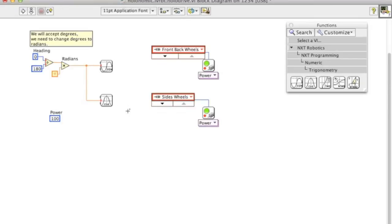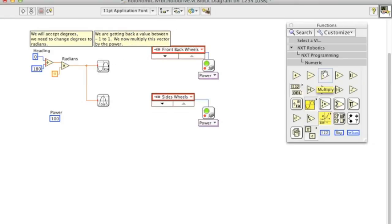Now the sine and cosine values we get back are between negative 1 and 1. They're not enough to power the motors. We need to multiply those values by the power that we chose before. Once we have those products, we wire them into the Move DC motor blocks.